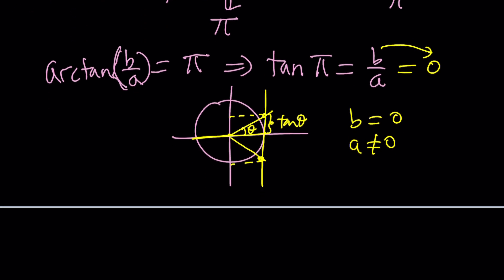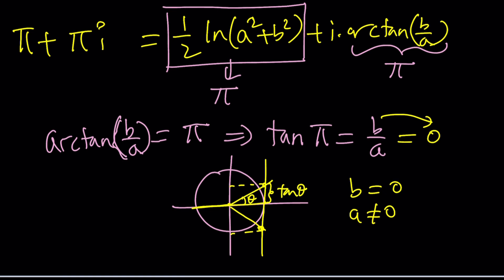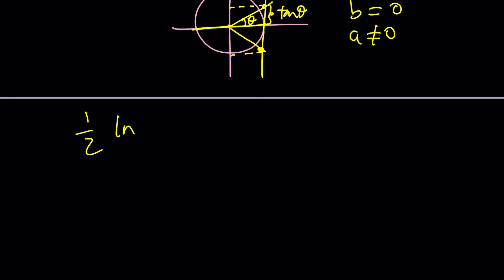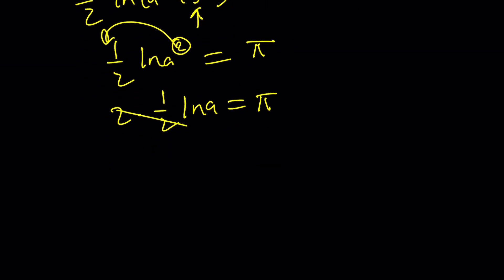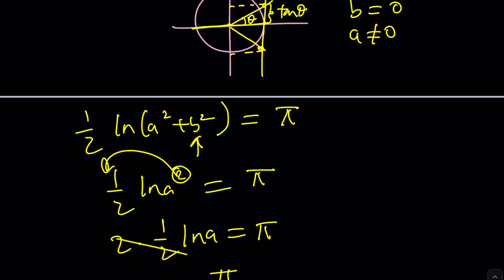And then if you plug it into the other one, one half ln(a² + b²) = π. But we already know b = 0. So one half ln(a²) = π. Bring this two to the front. Two times one half ln(a) = π. And then ln(a) = π. So a = e^π. Did we get that right? Hopefully.